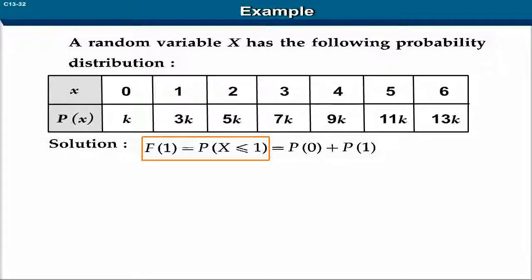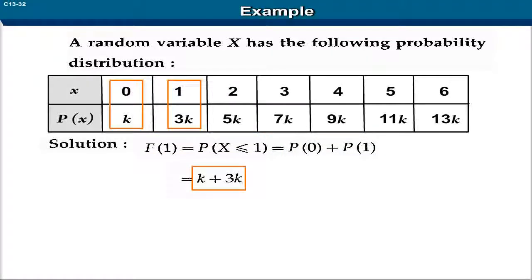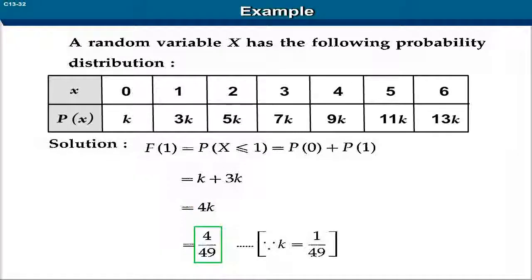F(1) is equal to P(X ≤ 1) is equal to P(0) plus P(1), which is equal to k plus 3k, equal to 4k. Substituting k = 1/49, this is equal to 4 upon 49.